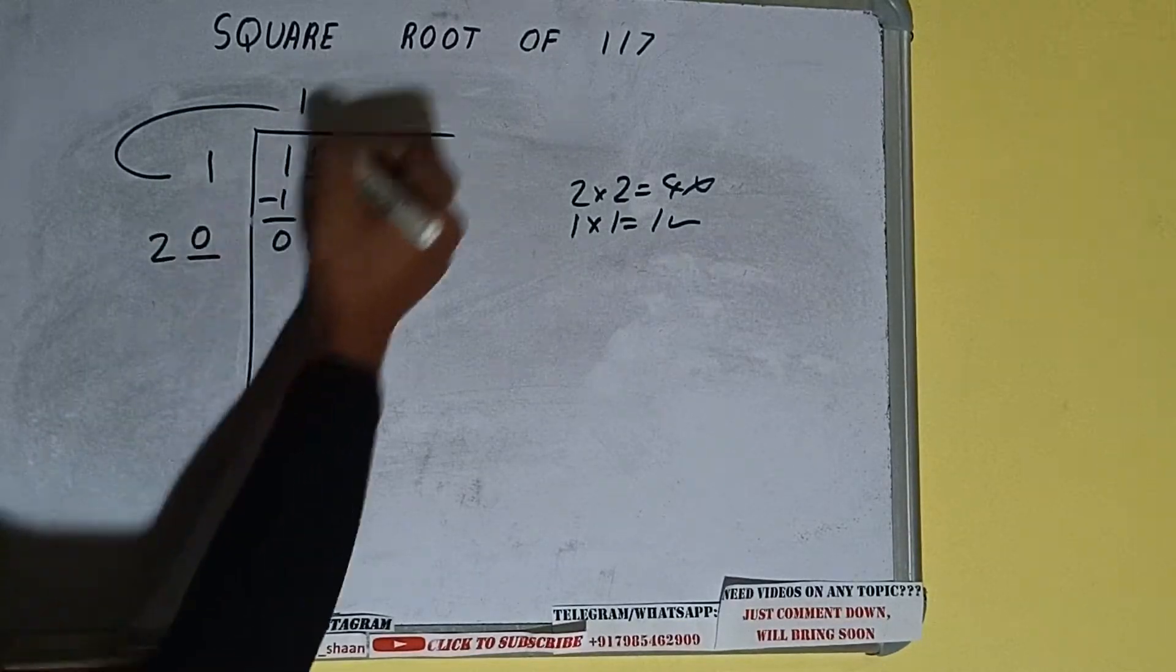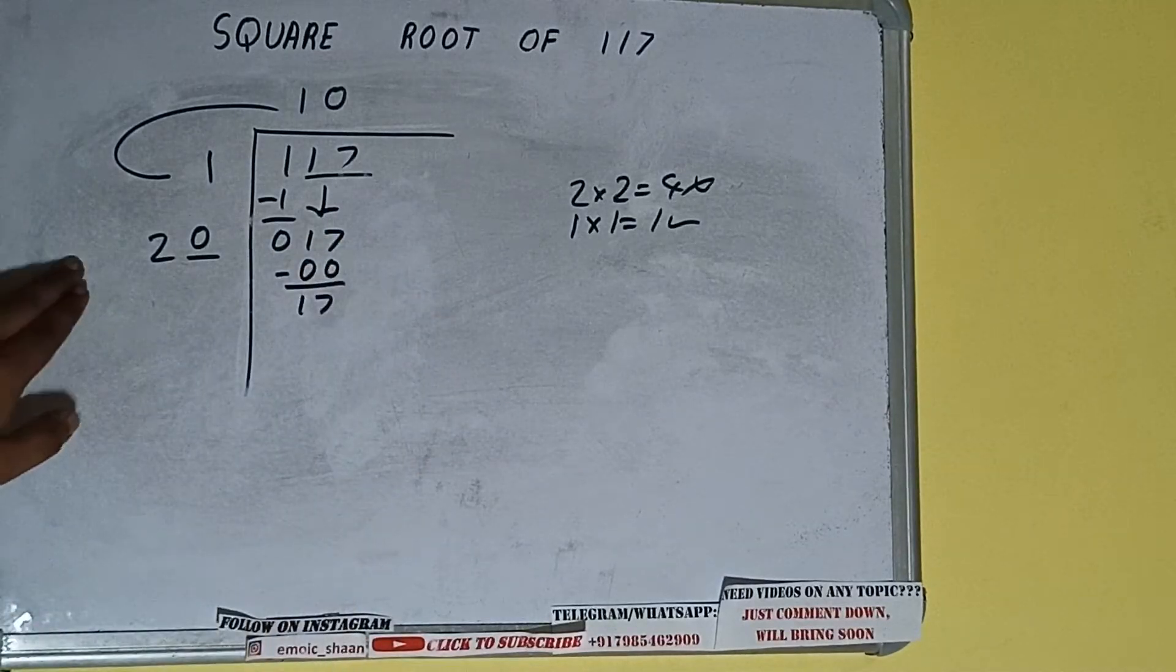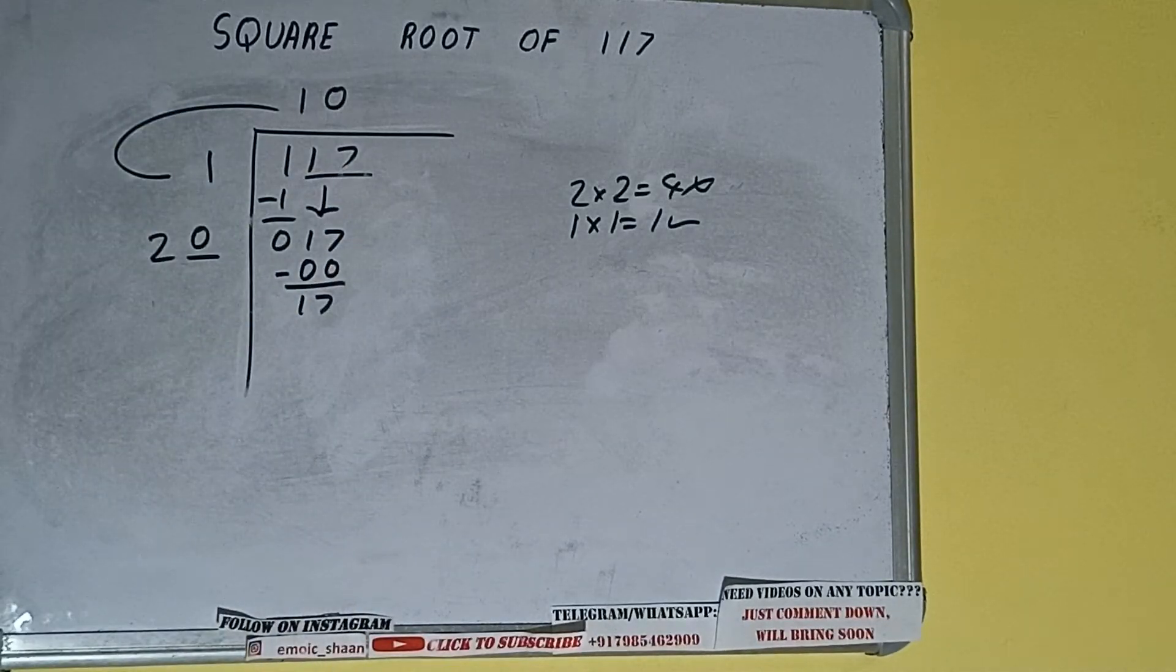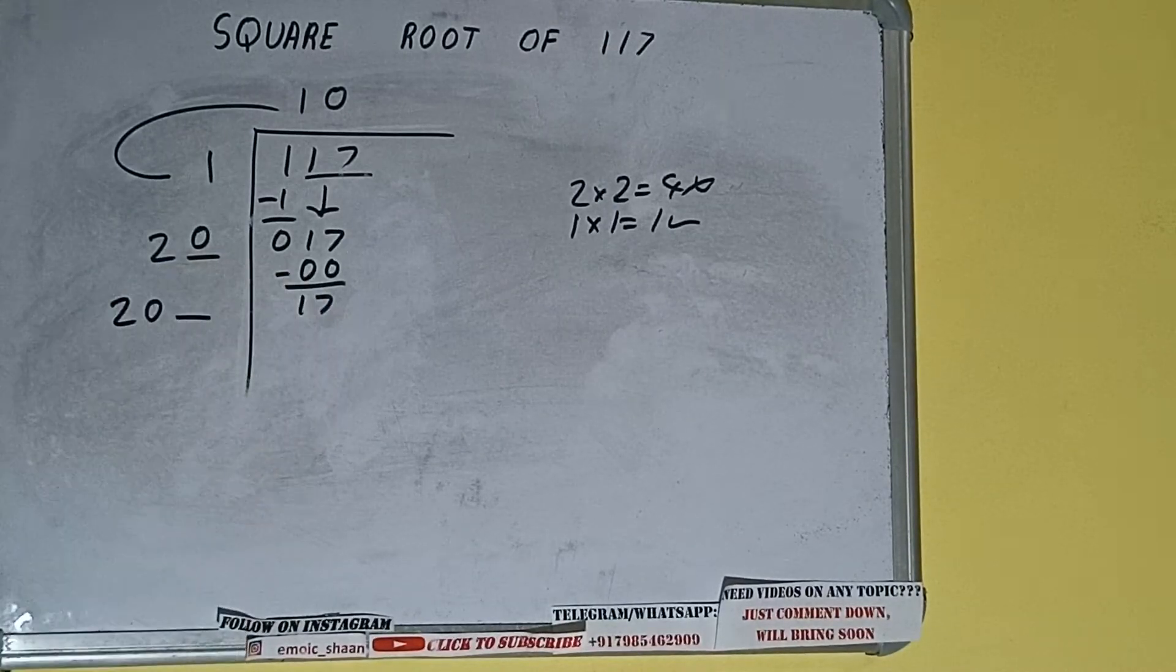So if we write 0 here and 0 here, 17 will be left. 20 into 0 we did, so add both. So 20 plus 0 will be once again 20. Write it here and keep a digit extra.